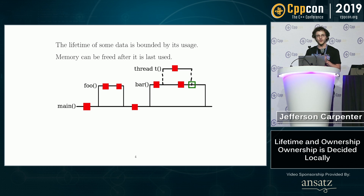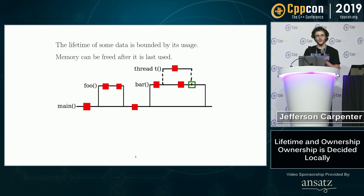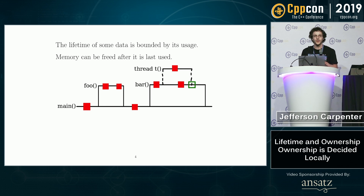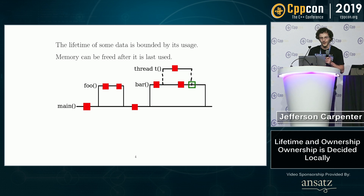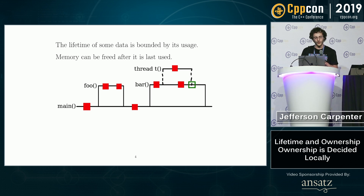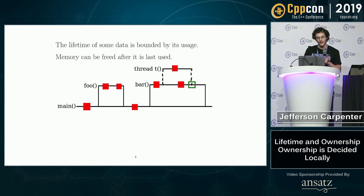consider this red box as a resource. It's allocated at the beginning of the main function, then it's passed around, a thread is forked, and then the thread is joined. The green box represents the lower bound of all of the usages of the data — this is the earliest point at which you can free it.